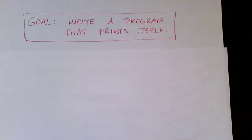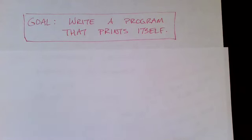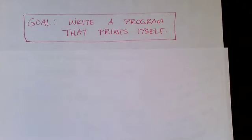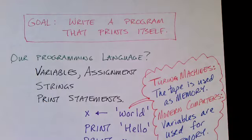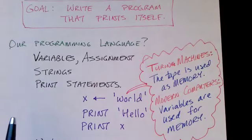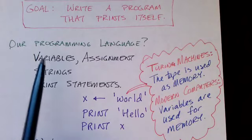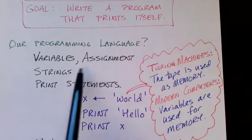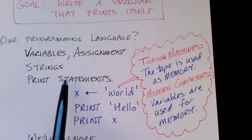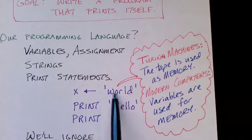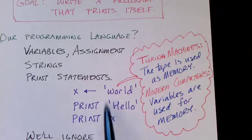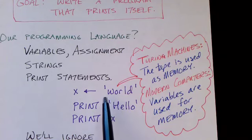Before we describe the recursion theorem, let's create a little goal for ourself. Let's try to write a program that is capable of printing itself out without using the approach where we access the code directly as data. So we need to have some sort of a little programming language in order to do this. And we don't need a very big programming language. We'll have variables, some sort of an assignment statement. We'll work with strings. And we have a print statement. This is really all we need in order to write this program. Here's an assignment statement setting x to world. And we can print strings and we can print this variable. This is all the mechanism we need in our programming language.